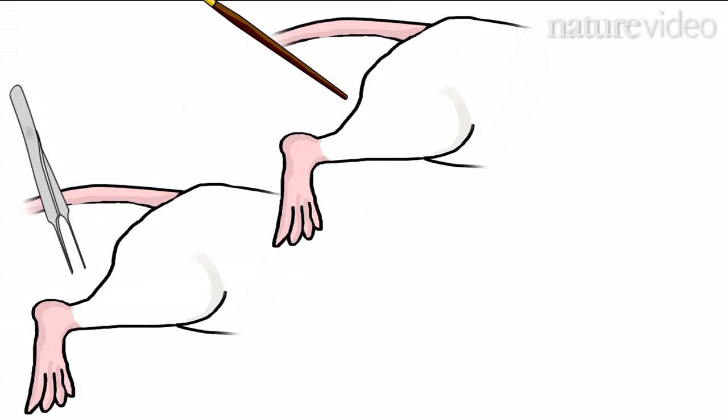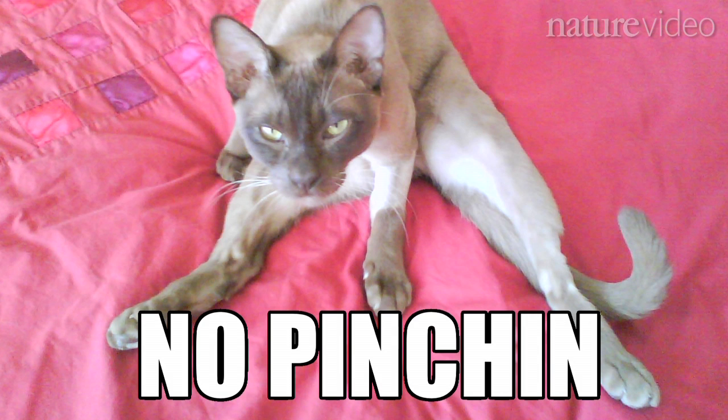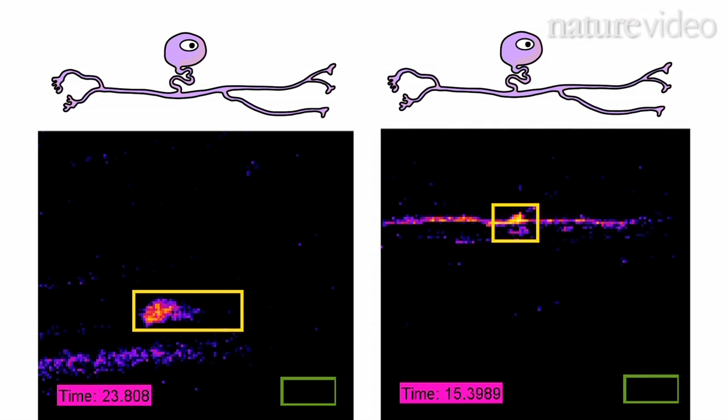Then they pinched, poked and stroked the mice on their hind paws. Alright then. The researchers saw one group of neurons light up when they stroked and a different group light up when they poked and pinched.